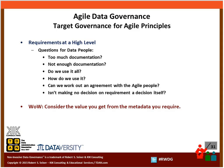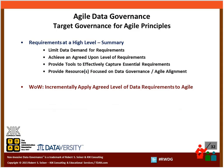Another word of wisdom: consider the value you get from the metadata you require, and make sure you truly require it and will truly use it before you ask for that information to be collected during the project. To summarize this agile principle: there is a limited demand for requirements in an agile approach. We want to achieve an agreed-upon level of requirements and provide tools to effectively capture essential requirements quickly, focusing on data governance aspects — quality, value, definition, production, and usage — in alignment with agile methodologies.